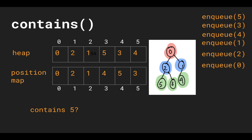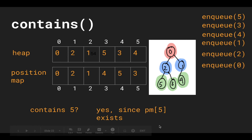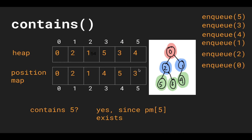Now let's go back to our original problem: contains. Contains took linear work because we had to search our entire heap to check if something was in our binary heap. So let's say someone asks us if our binary heap contains 5. We no longer have to search our entire heap — all we have to do is check to see if our position map has a value at index 5. Since it does, we can say yes, 5 is in our heap. And notice that this took constant time — all we had to do is index into the position map.